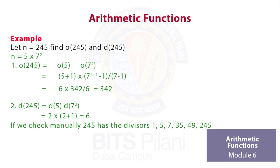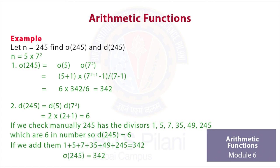Using the first formula, d(5) = 2, and d(7²) = 2 + 1 = 3, so d(245) = 2 · 3 = 6. We can check this manually: 245 has the following divisors — 1, 5, 7, 35, 49, and 245. Counting them, there are 6, confirming d(245) = 6. If we add all these divisors, the sum comes out to be 342, confirming σ(245) = 342.